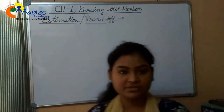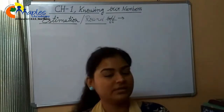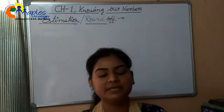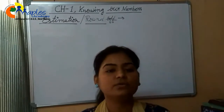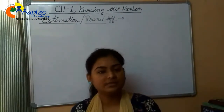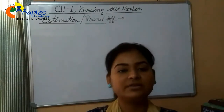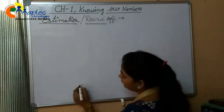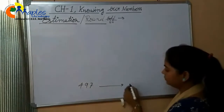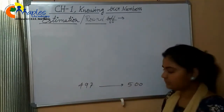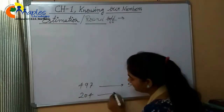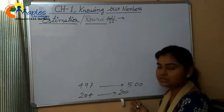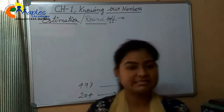Because our topic is estimation, we will first start with: what is estimation? Suppose a student goes to the market and spends some money to purchase goods — like 497 rupees. So that is estimation. If you round off the number 497, you say 500 rupees. Or 204 rupees, you say 200 rupees. So estimation means rounding off numbers.